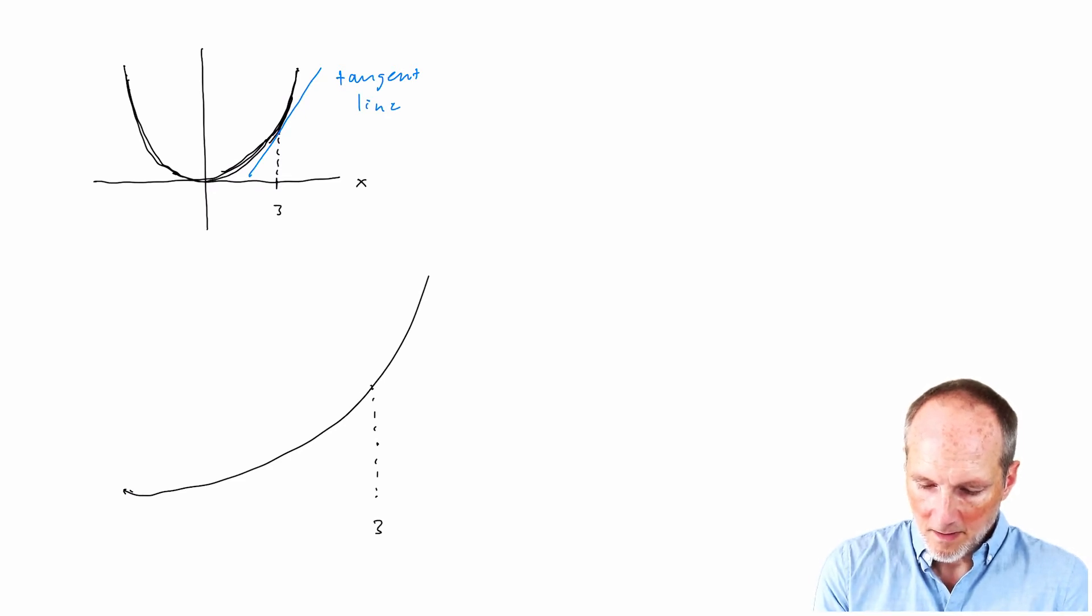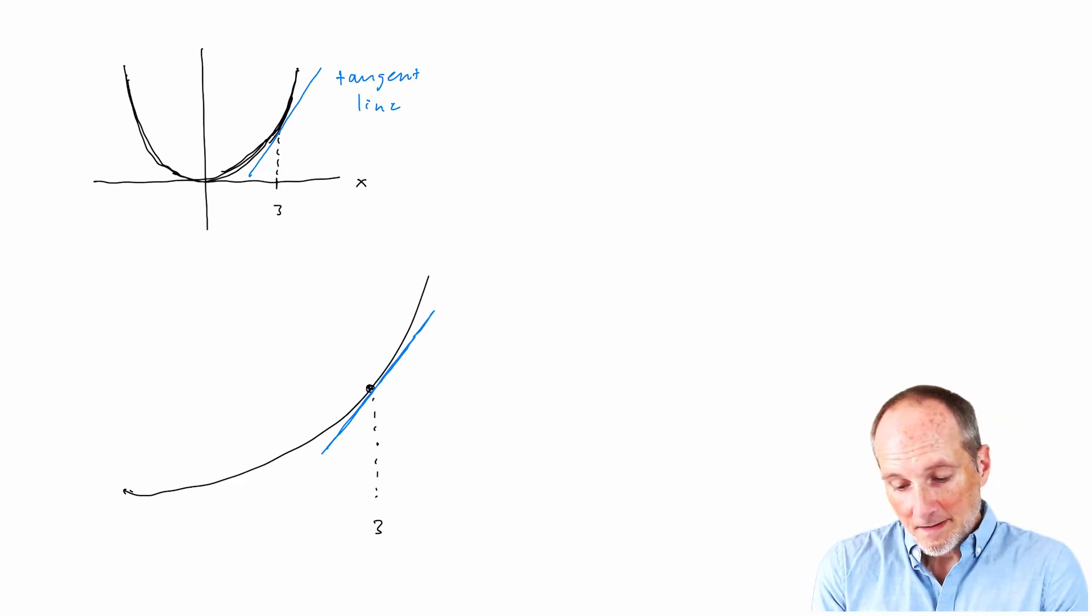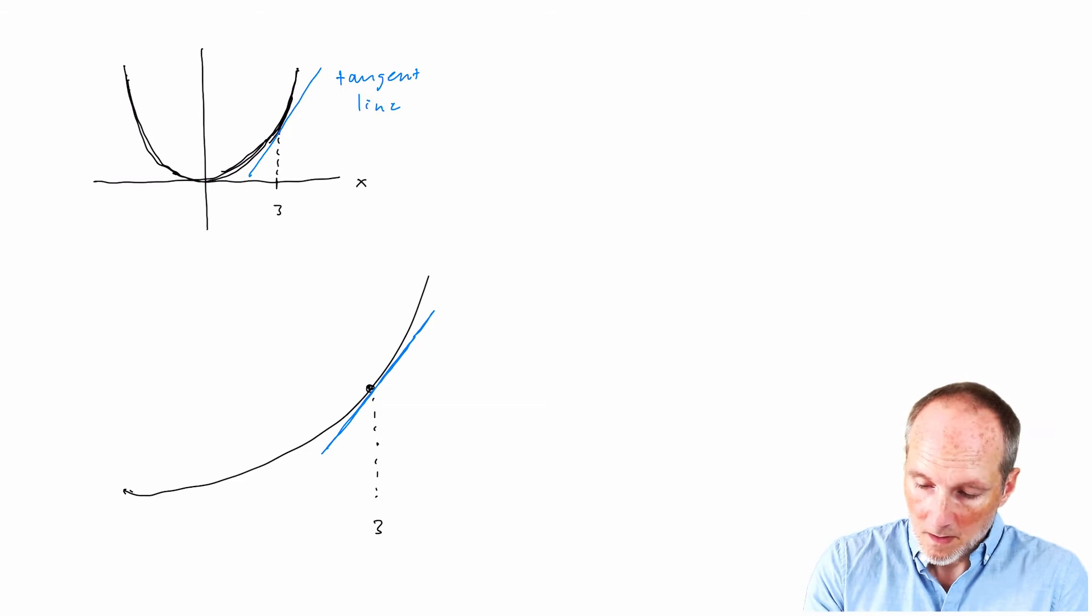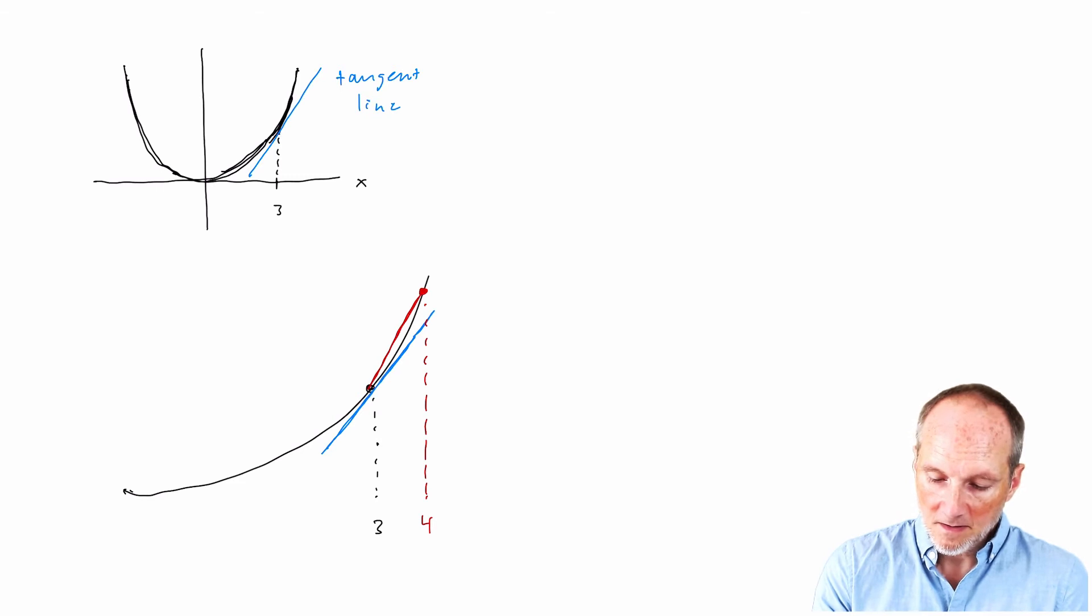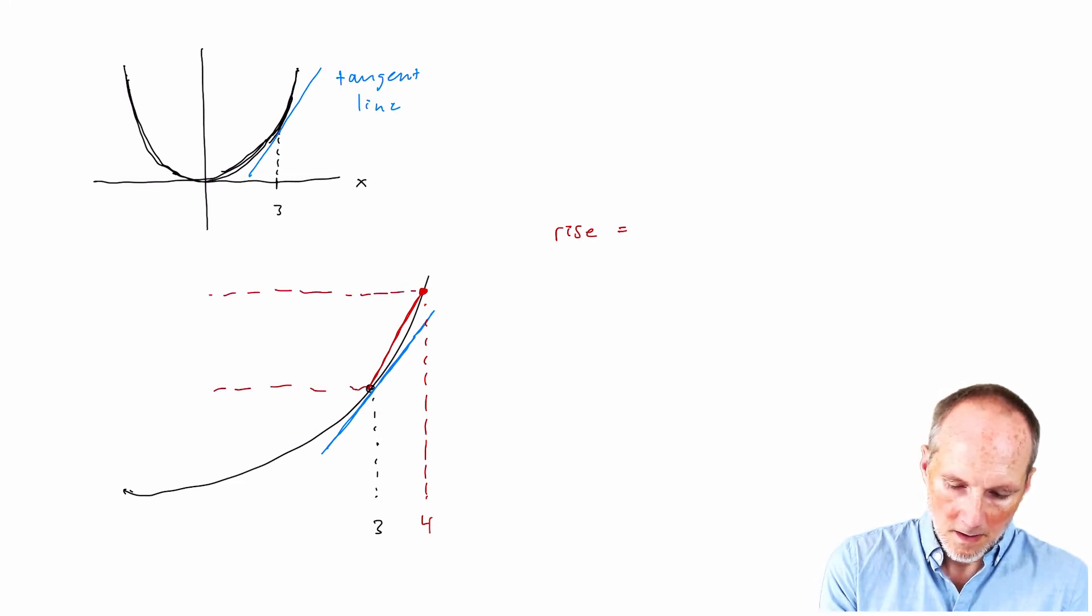Now, for this, we're actually going to be doing approximations. So we have this tangent line, and let me blow this up. So let's suppose 3 is right here, here's our tangent line. Now, we don't know exactly what that is yet, but suppose I pick another point on this curve. Let's say that's at 4.